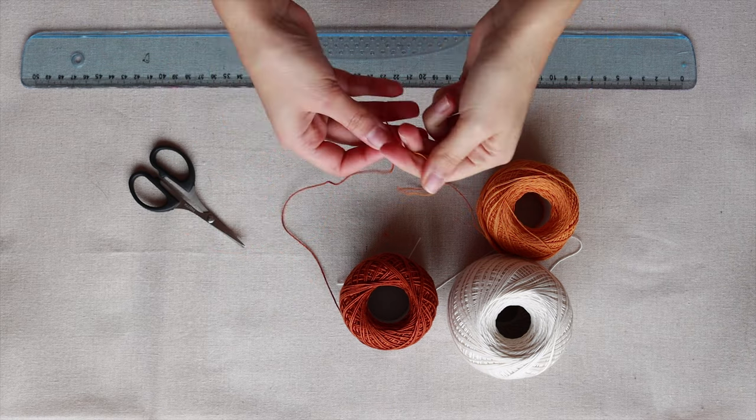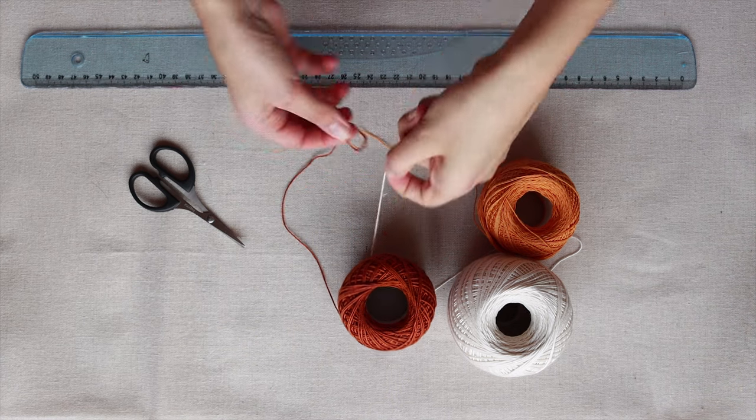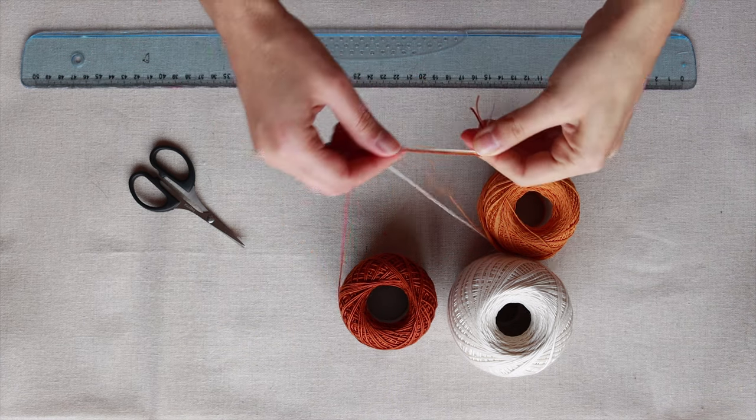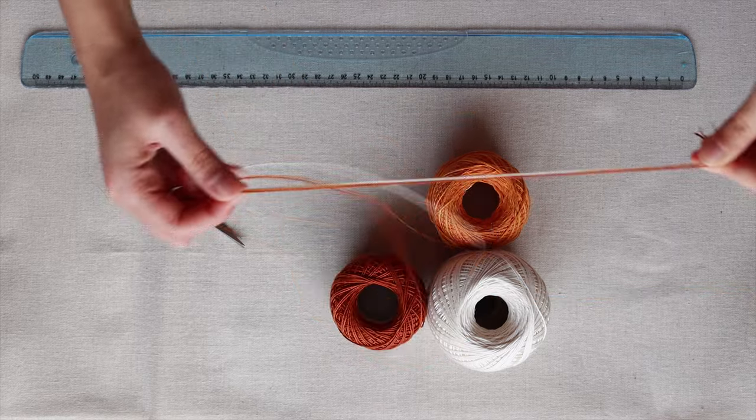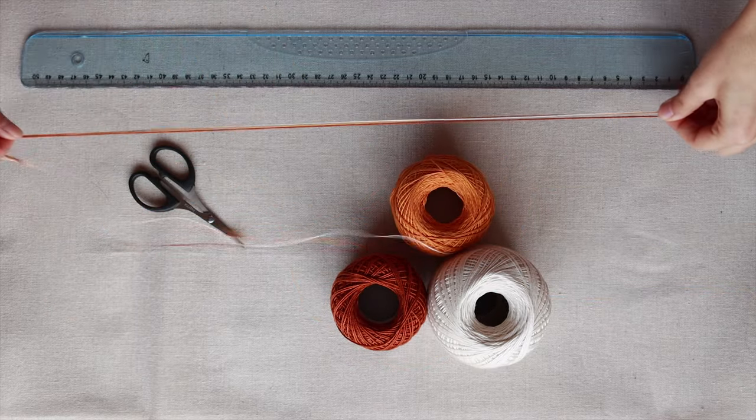Start by choosing your colors and cutting the cords. I recommend using at least 4 cords, measuring between 50 to 60 cm depending on the size of the wrist.